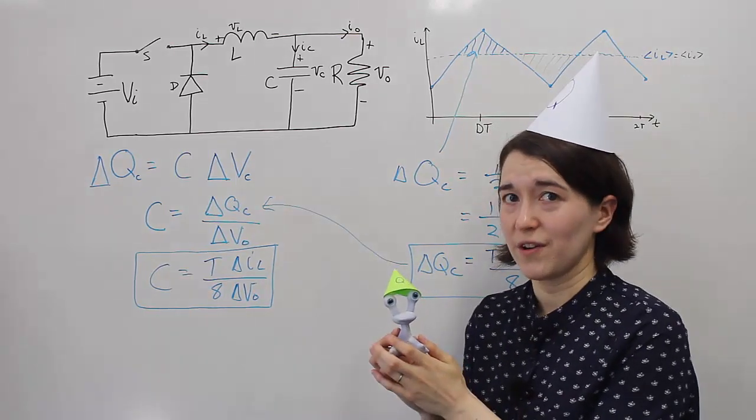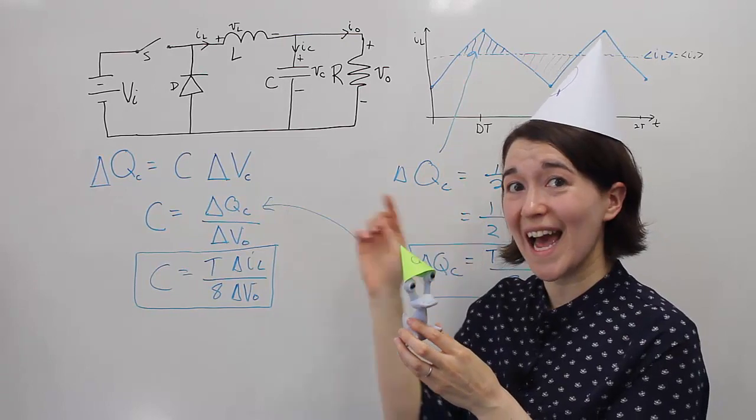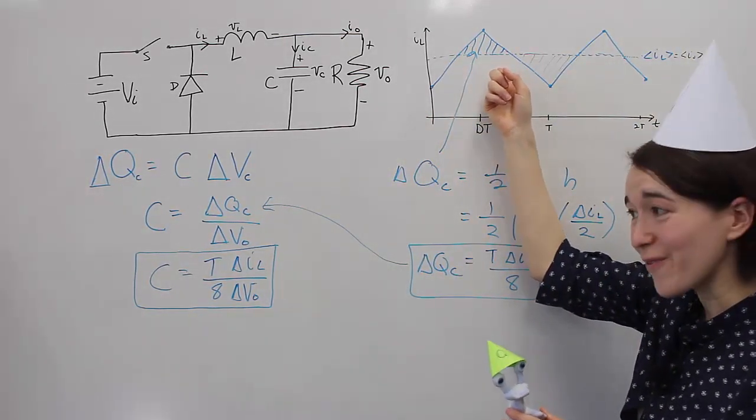So for the buck converter, remember that you are looking at the triangle, the charge hat of the inductor ripple waveform, and you can calculate the minimum capacitance based on this equation.